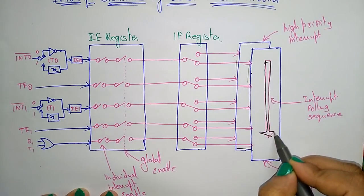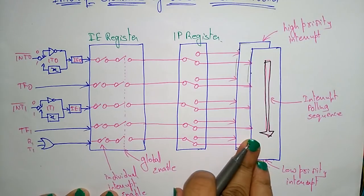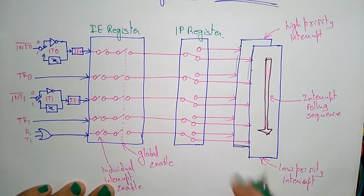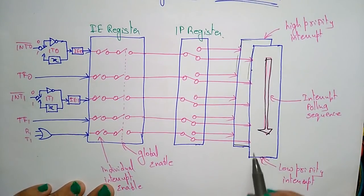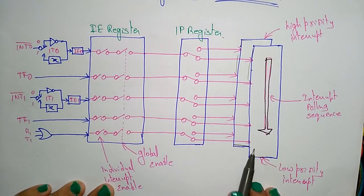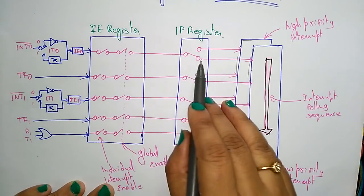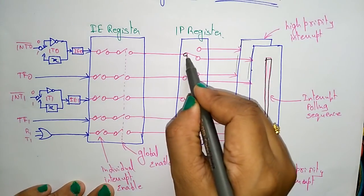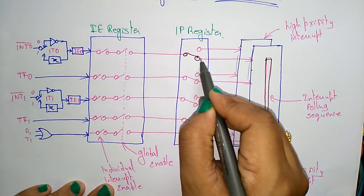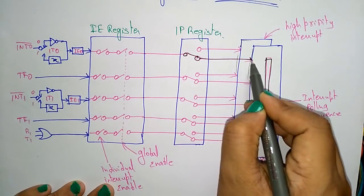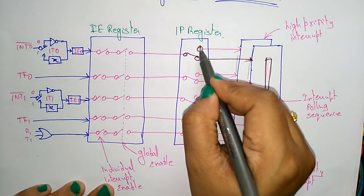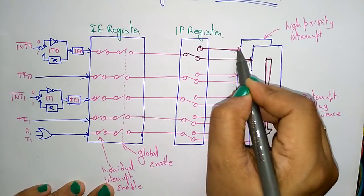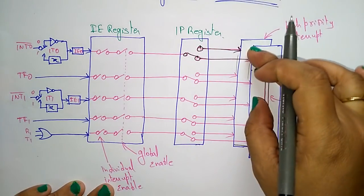The interrupt polling sequence indicates which interrupt to send to the CPU. Low priority interrupts are stored here, and high priority interrupts are stored here.